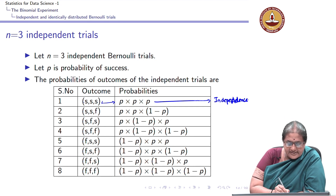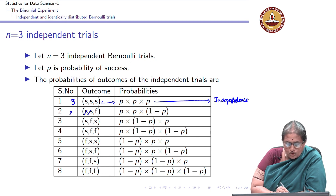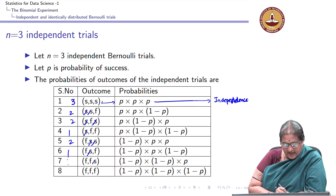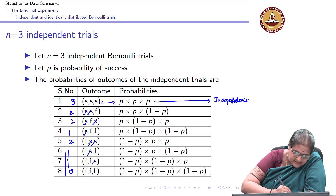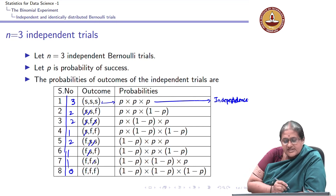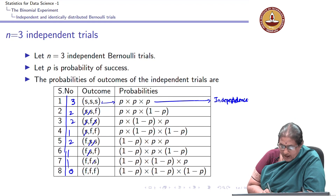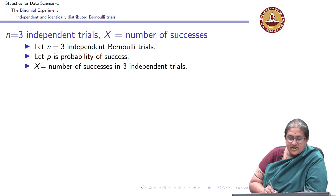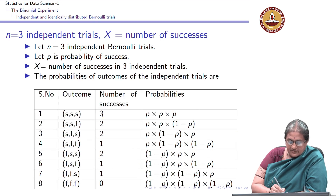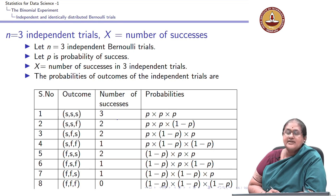Now, if I am going to map it, I see in this outcome I have 3 successes, in this outcome I have 2, in this I have 2, in this I have 1, in this I have 2, in this I have 1, in this I have 1, and in this I have no success. So, what this counts is the number of successes in these outcomes. I can map the random variable x to be the number of successes: 3, 2, 2, 1, 2, 1, 1, 0. The probabilities remain the same.